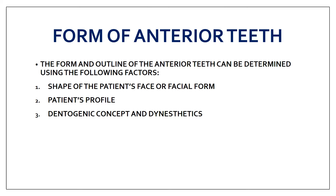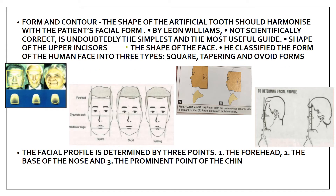For anterior teeth selection, we consider three factors: size (covered in the last part), form, and color. The form and outline of the anterior teeth can be determined using three factors: the shape of the patient's face (facial form), the patient's profile, and the dentogenic concept. The shape of the artificial tooth should harmonize with the patient's facial form.